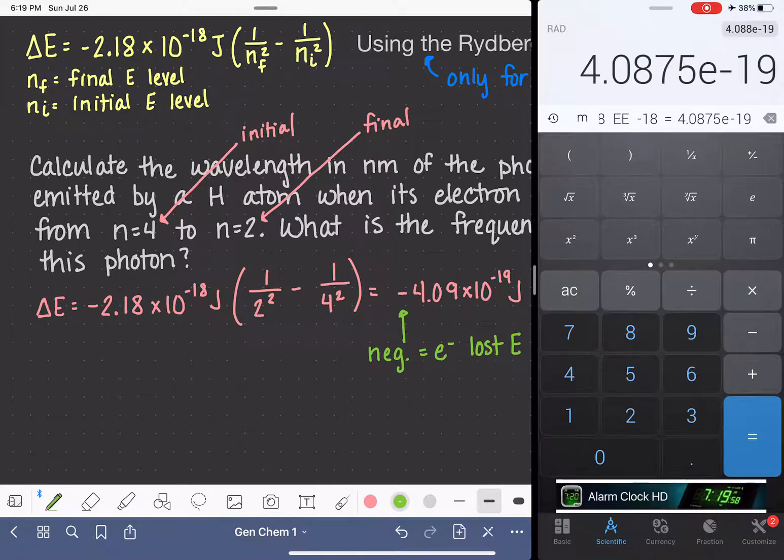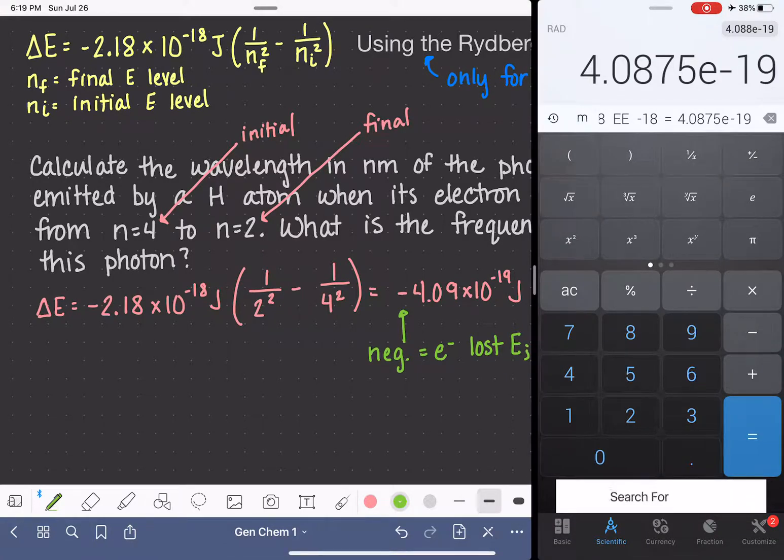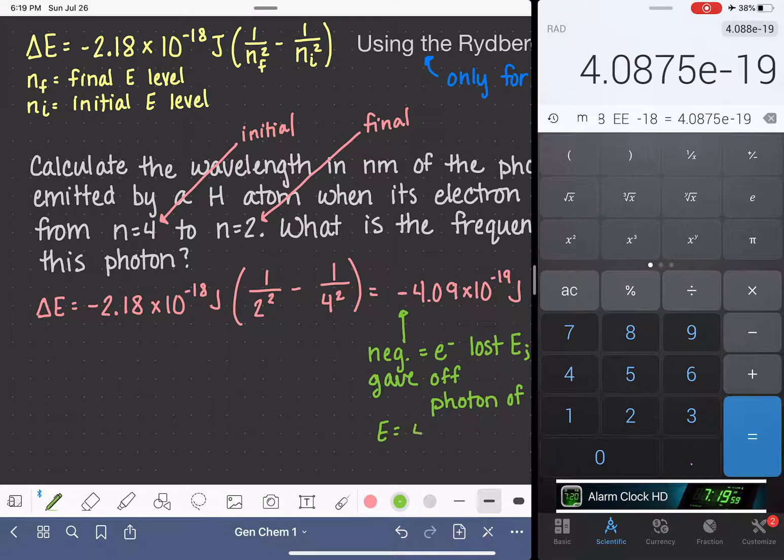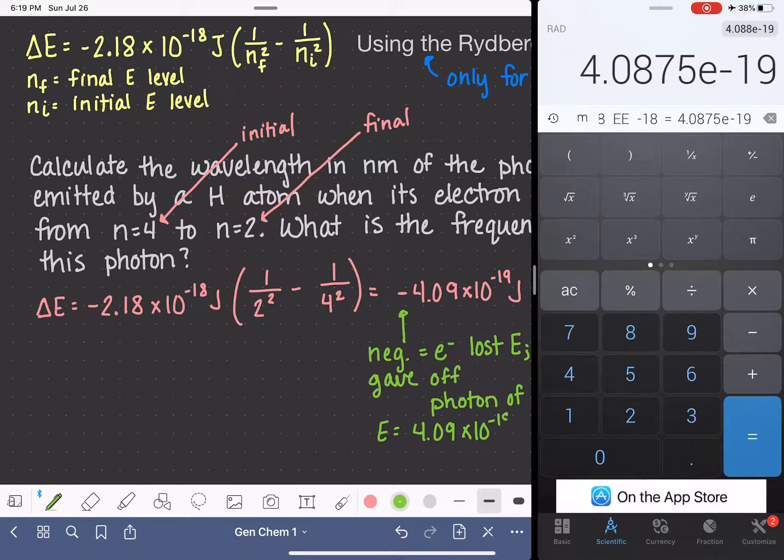So all that this negative sign is telling me is that the electron lost energy. If it was a positive sign, that would mean that the electron gained energy. Electron losing energy, that just means that it gave off a photon. So the photon that was emitted by this electron had this much energy. Photon of energy equal to 4.09 times 10 to the negative 19 joules.